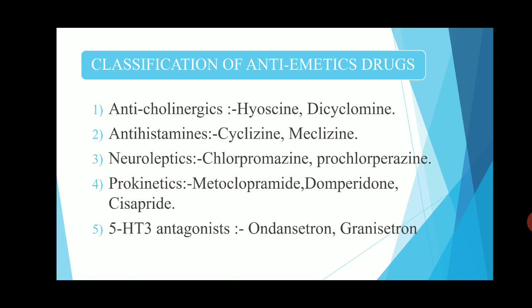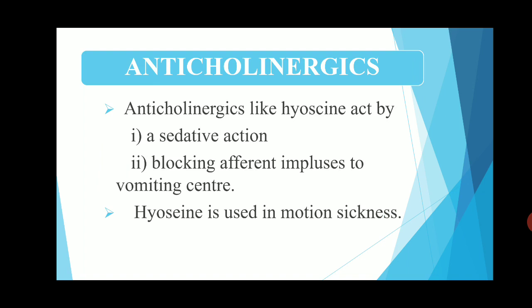The classification of anti-emetic drugs has five main classes: first, anticholinergics — for example, hyoscine and dicyclomine; second, antihistamines — cyclizine and meclizine; third, neuroleptics — for example, chlorpromazine and prochlorperazine; fourth, prokinetics — for example, metoclopramide, domperidone, and cisapride; fifth, 5-HT3 antagonists — ondansetron and granisetron.